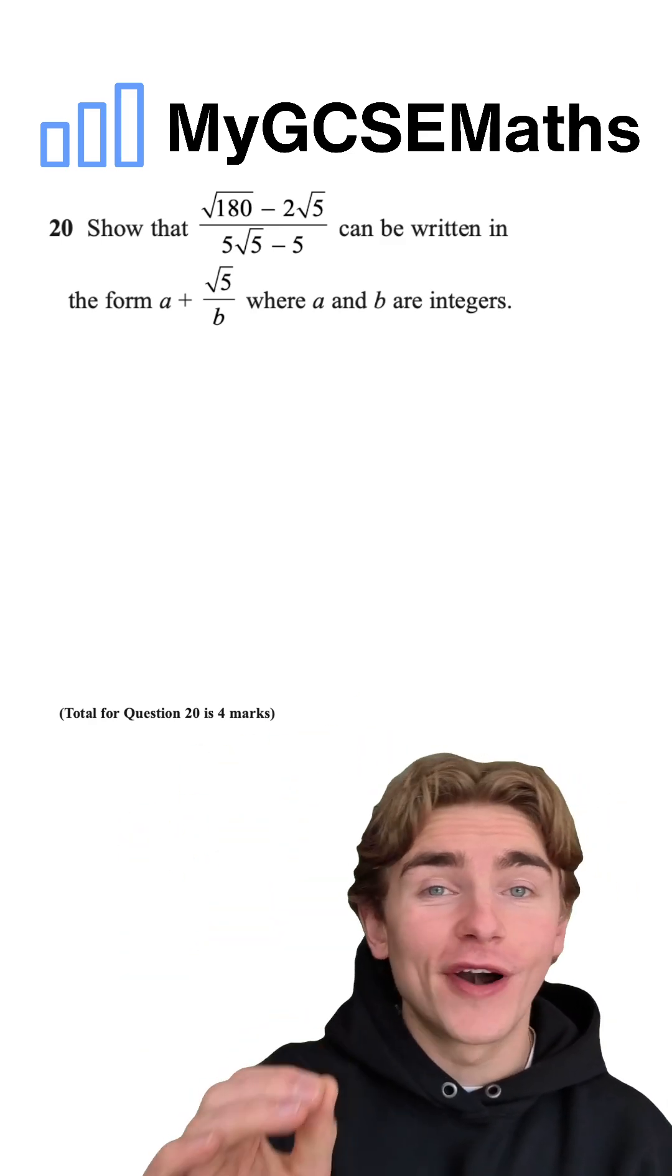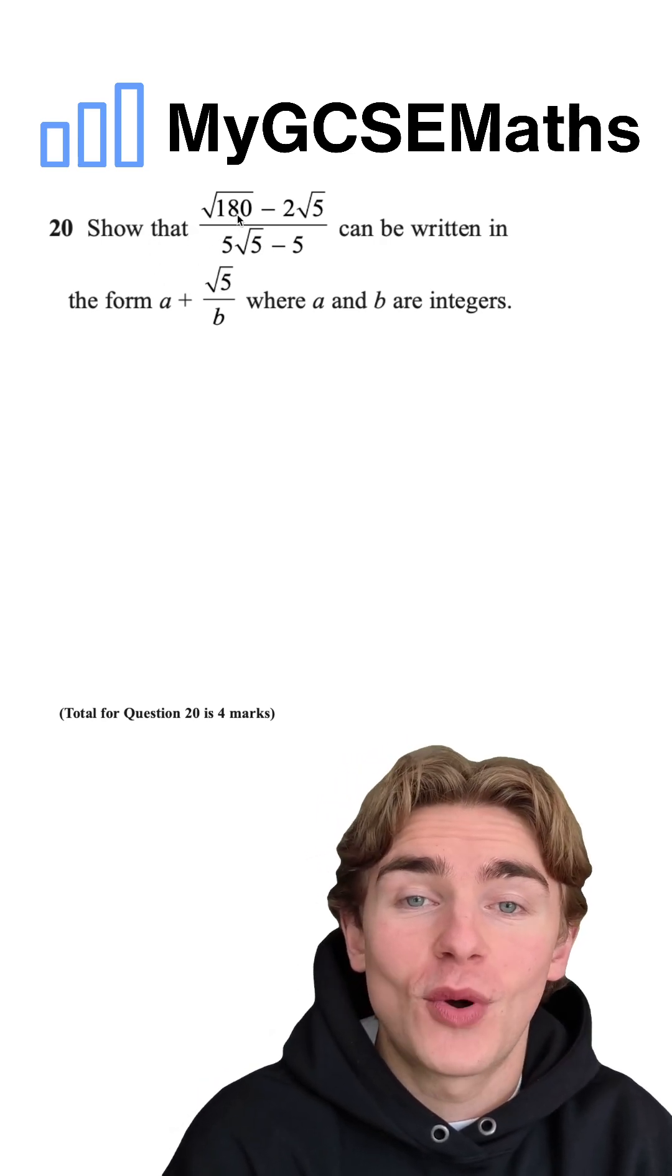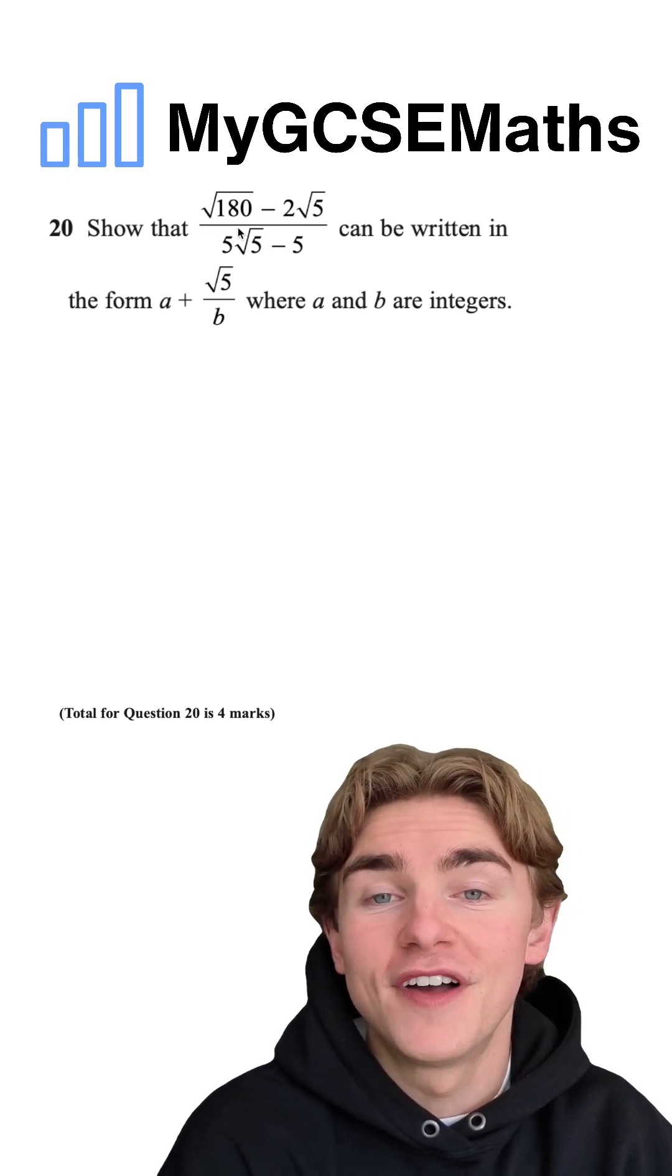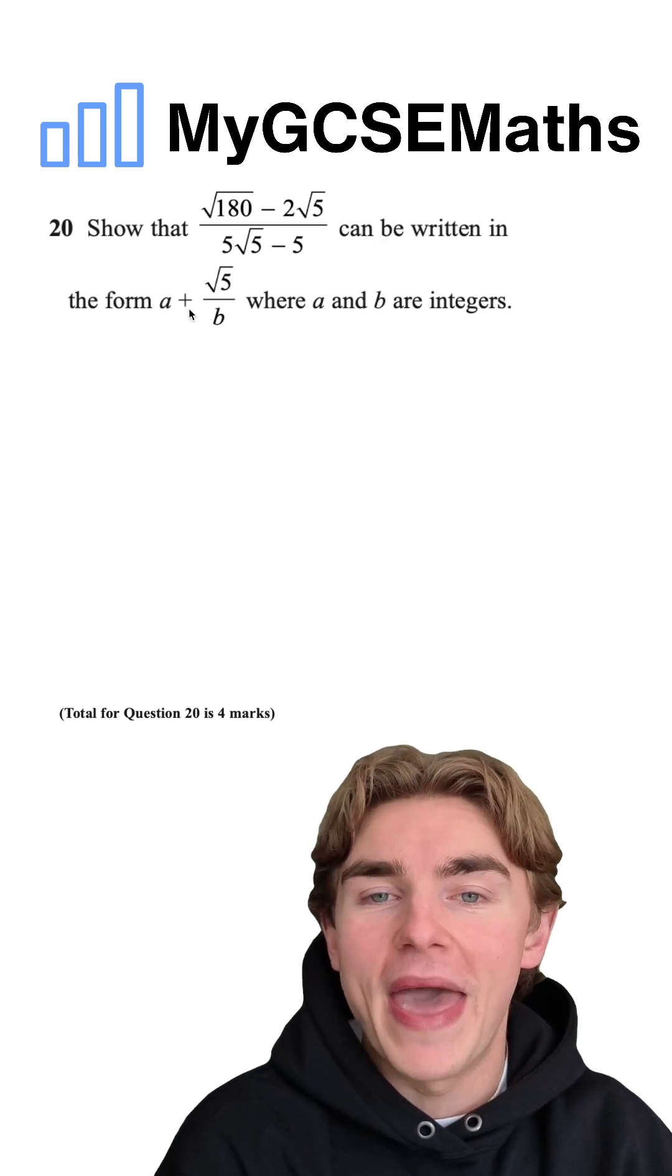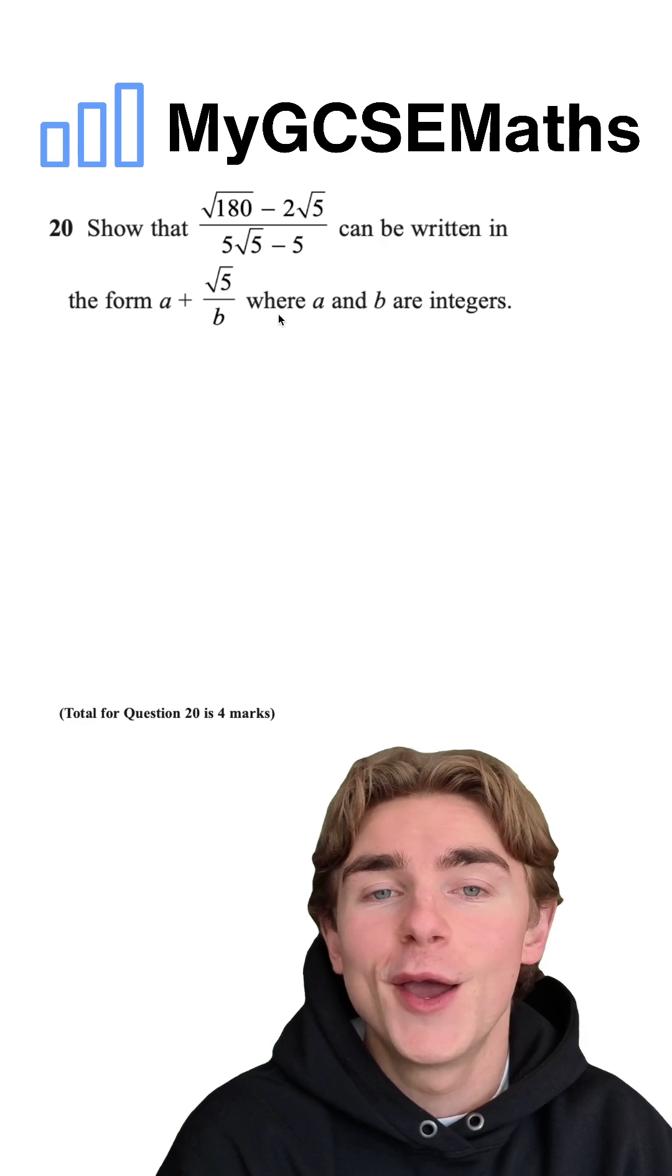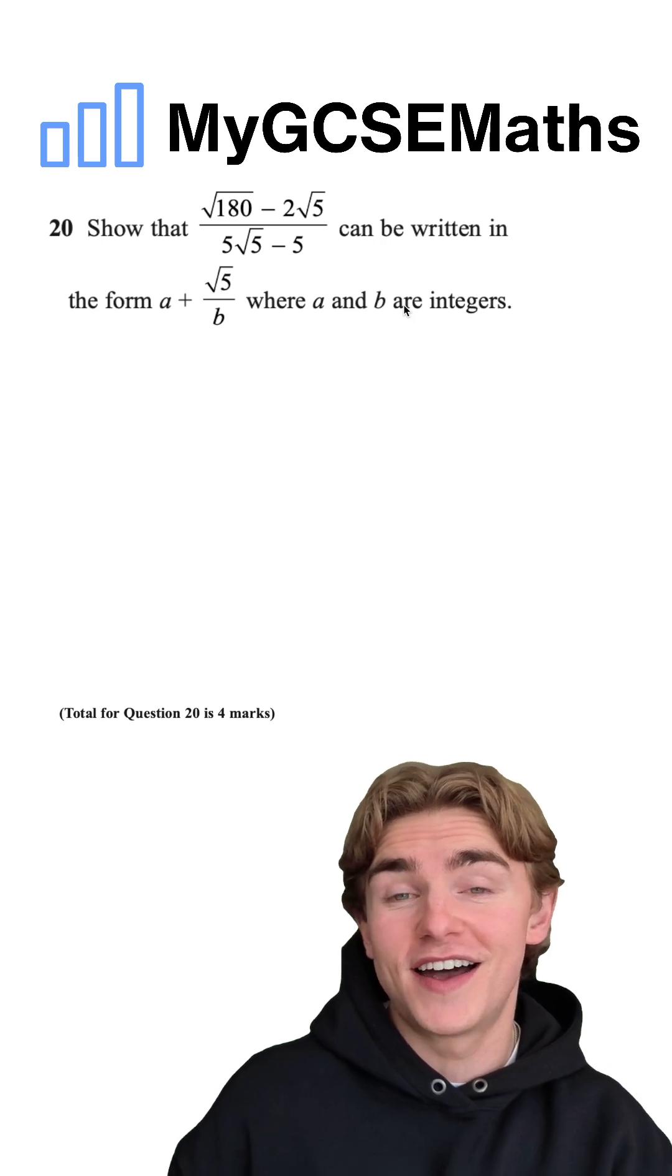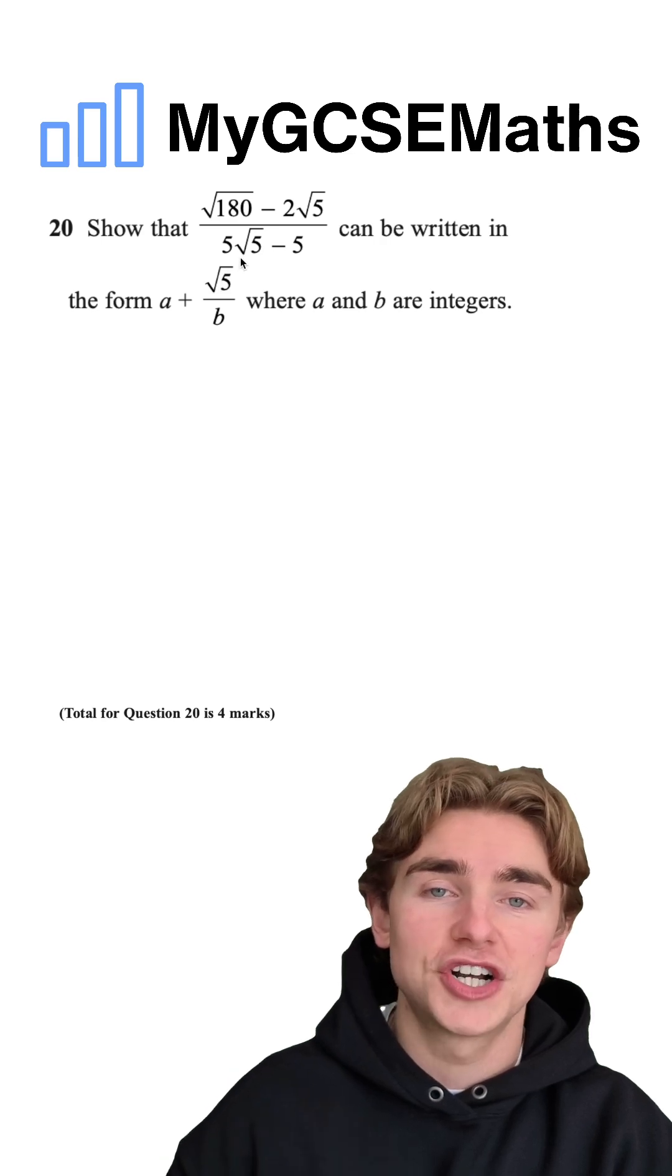Here we have a 4 mark grade 9 rationalizing question. Have a look and see if you can do it. The question says, show that the square root of 180 minus 2 root 5 over 5 root 5 minus 5 can be written in the form A plus root 5 over B, where A and B are integers. As soon as we see a question like this, guys, where we have the surd on the bottom, we're thinking that we're going to have to rationalize.